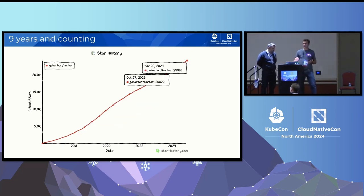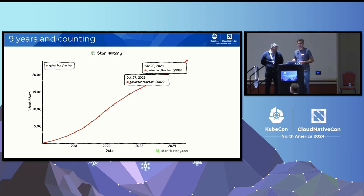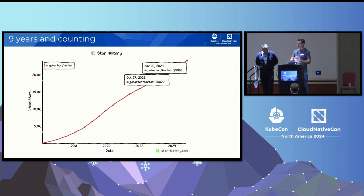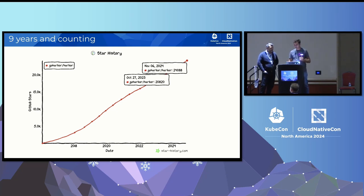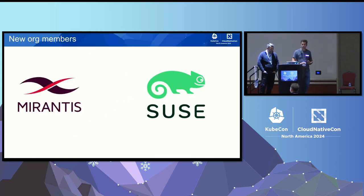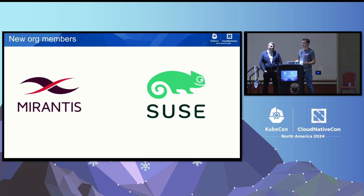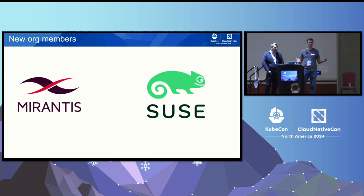I don't believe much in GitHub stars, but for the last year we collected more than four thousand stars, which means a lot. So if some of you gave us a star in the last year, thank you very much. We're going up in terms of stars and forks — that's a good metric showing people pay attention to our project. On new community members: Mirantis announced they're going to migrate their private registry to Harbor — keep an eye on that — and SUSE is also extending their effort in the Harbor space.